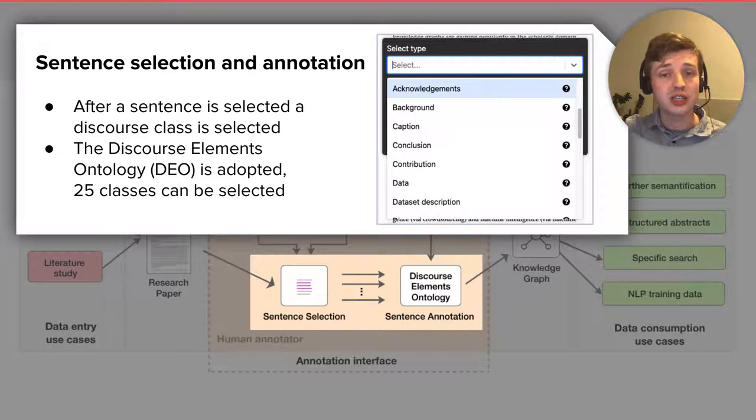Now, let's have a look at the human role in this process. A user, of course, has to select the sentences within the article and then choose the relevant discourse class. They can choose from 25 classes which are coming from the discourse elements ontology or DEO.